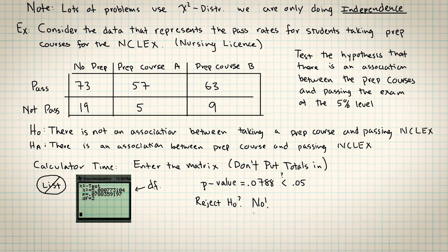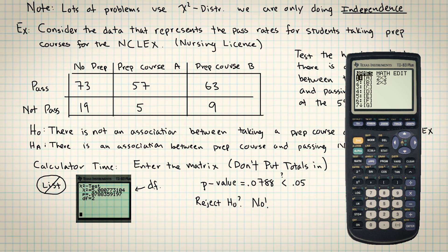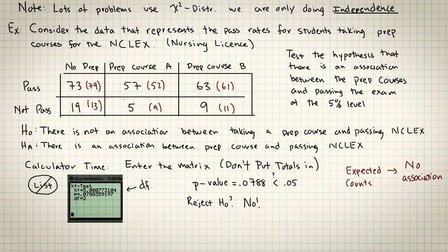We don't have enough evidence here to reject the null hypothesis. You can see the calculator has populated matrix B. This is the output matrix. And this matrix will give you the expected counts. These are the expected counts if there was no association. It's our culture to put them in parentheses in the table after you figure out what they are.